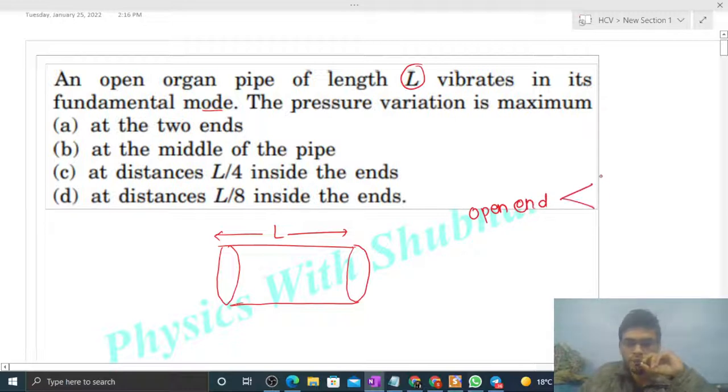Then at that point, the displacement wave has an antinode, and the pressure wave has a node, because there is a phase difference of π/2 between them. So you can see, let's draw the waves. Let me draw the displacement wave.